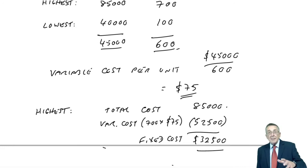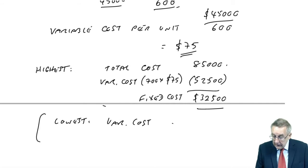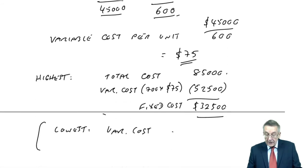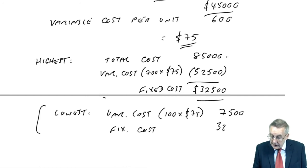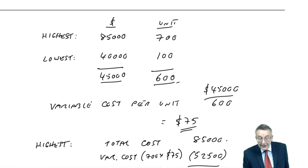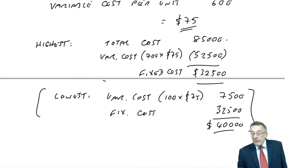And we can actually check that, although don't waste time in the exam, for heaven's sake, be confident. But I can check it because if you look at the lowest month, the total variable cost, well in the lowest month we produced 100 units, so 100 times $75 is $7,500. In addition, a fixed cost every month, which I'd worked out to $32,500. And so the total cost should be $40,000. And was it? Yes, it was. So you'd get the fixed cost by looking at either of them. But again, don't waste time in the exam checking in that way.